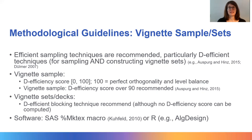Regarding the vignette sample, it is generally recommended that designs with a D-efficiency score over 90 should be selected. A D-efficient blocking technique is also recommended for building the vignette sets, also called the decks, ensuring orthogonality and level balance are optimized within each vignette set. Unfortunately, there is currently no software that allows computing D-efficiency scores for vignette sets. However, software is available such as the SIS macro or the ALK design package in R, which draws your vignette sample and creates the vignette sets that you can then further prepare in other software such as STATA to build the actual vignettes.